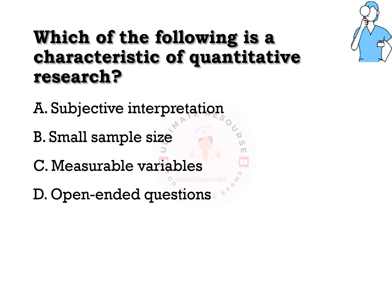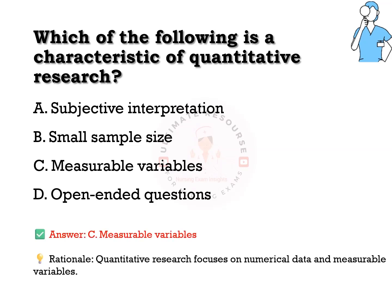Which of the following is a characteristic of quantitative research? Options are a) subjective interpretation, b) small sample size, c) measurable variables, d) open-ended questions. The answer is c) measurable variables. Quantitative research focuses on numerical data and measures.